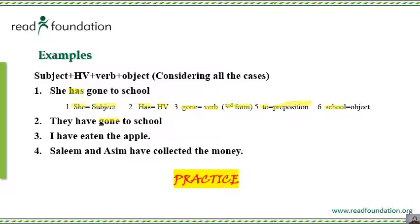Fourth example: 'Salim and Asim have collected the money.' The word 'and' joins two subjects and makes them plural. So we use 'have'. 'Collected' is the third form of 'collect' — collect, collected, collected. This is a regular verb. 'Have collected the money' — that's the structure.